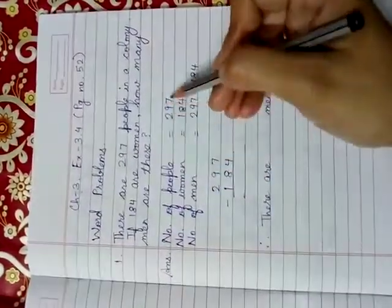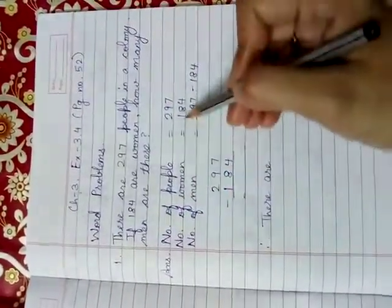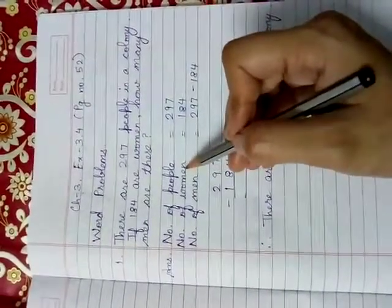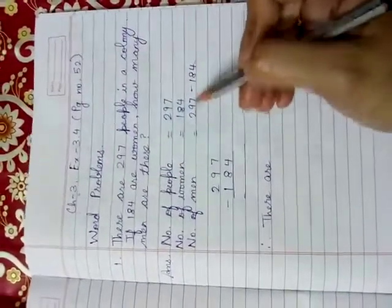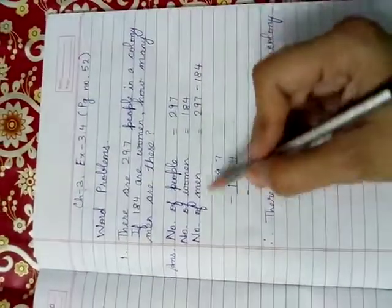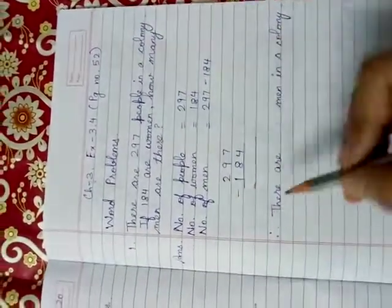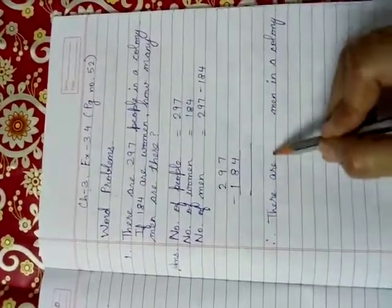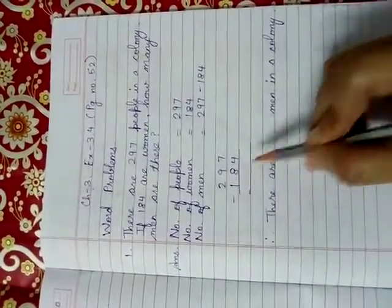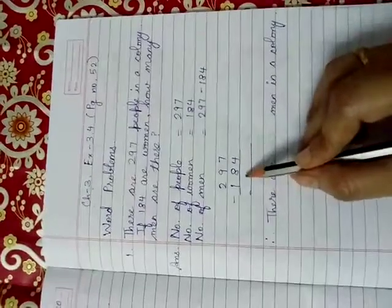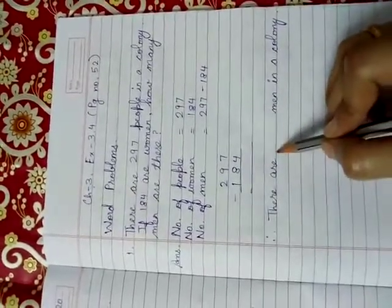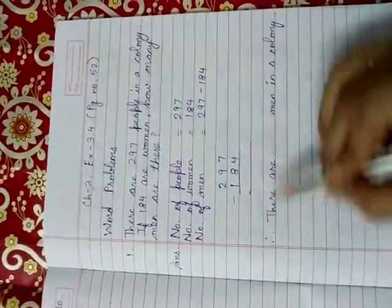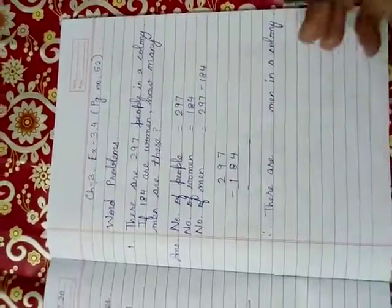What will you write? Number of people. 297. Number of women. 184. Number of men. How will you find? When? Number of women will be subtracted from number of people. So, I have shown. You will find the difference. And then, therefore, the conclusion line. There are. You will write the answer here. Whatever answer you will find, you can note it down from the book. Just we have done. Page number 52. Note down the same answer, which will come here. There are dash men in a colony.